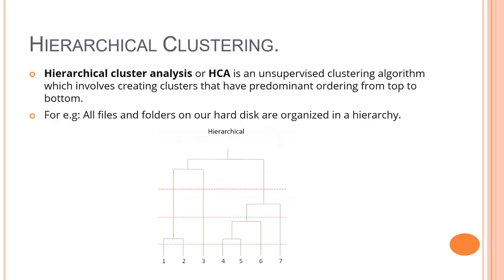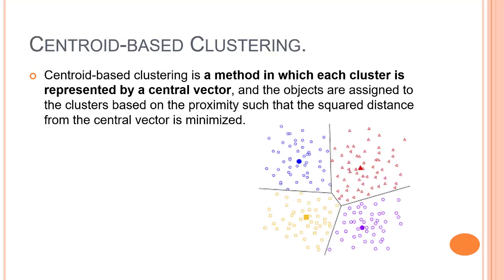Hierarchical clustering creates a tree of clusters, making it well suited for what is known as taxonomic or hierarchical data. One key advantage is that any number of clusters can be chosen simply by cutting the tree at the right level. This is useful because, as we'll see with centroid-based clustering, choosing the number of clusters is an important task — hierarchical clustering sidesteps that constraint.